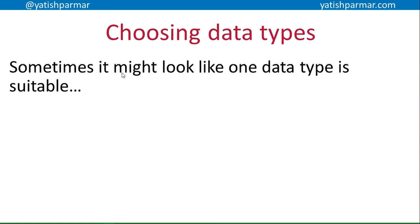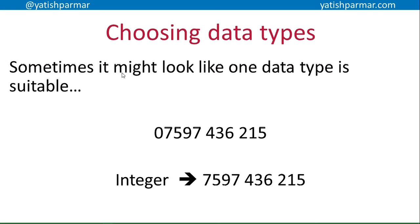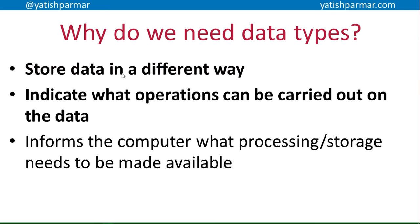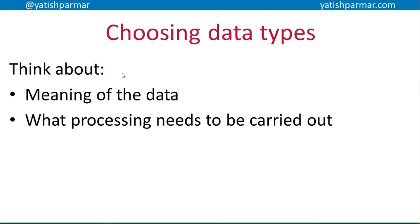Now that you know the five basic data types, how do you choose one? Sometimes it looks like one data type is suitable — take the telephone number. Lots of students say 'it's a number, I'll store it as an integer,' and they lose the zero at the beginning. For a computer, a zero at the beginning of a number is meaningless — it's a leading zero with no value. So when you store something as an integer it doesn't store that zero. You need to think about the meaning of the data — that leading zero has meaning, so we can't store it as an integer.